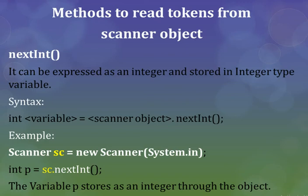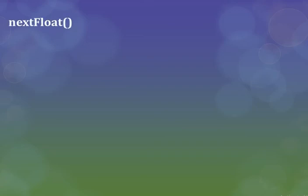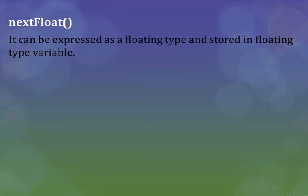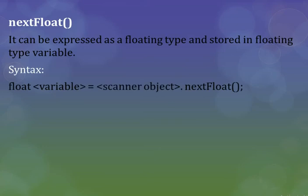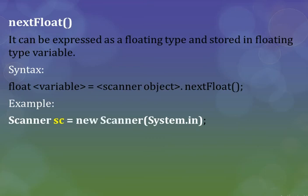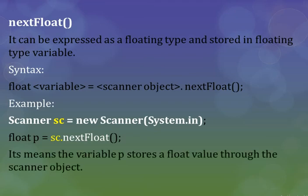The nextFloat() method can read a floating point value and store it in a floating type variable. The syntax is: float variableName = scannerObject.nextFloat(); Example: Scanner sc = new Scanner(System.in); float b = sc.nextFloat(); Here b is a variable of floating type, and the Scanner object stores the float value into that variable.